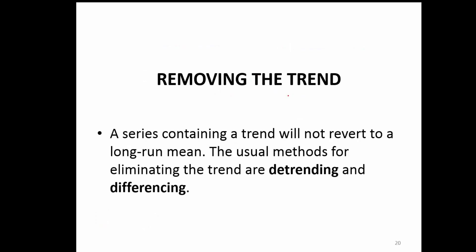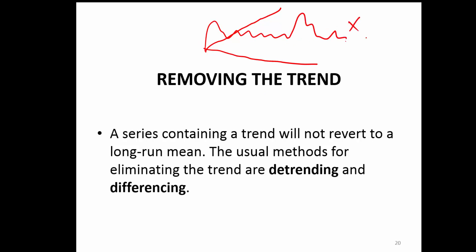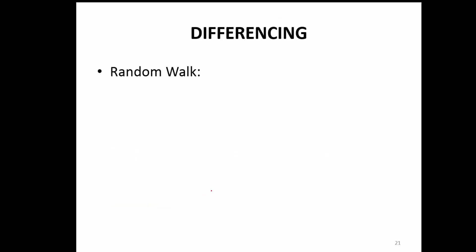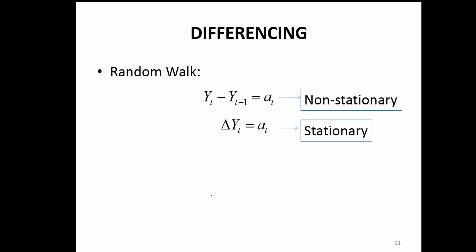How do you remove the trend from a series? A series containing a trend will not revert to the long-run mean — if a series has an upward or downward trend, it is never going to come back to the mean. The usual methods for eliminating trend are detrending and differencing. If you take the first difference of a random walk, it is likely to be stationary.